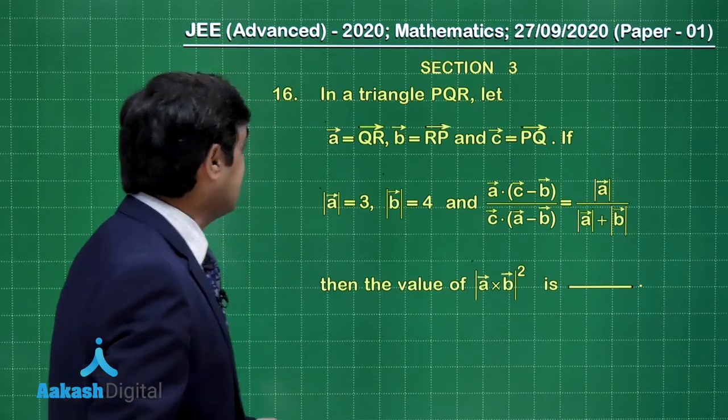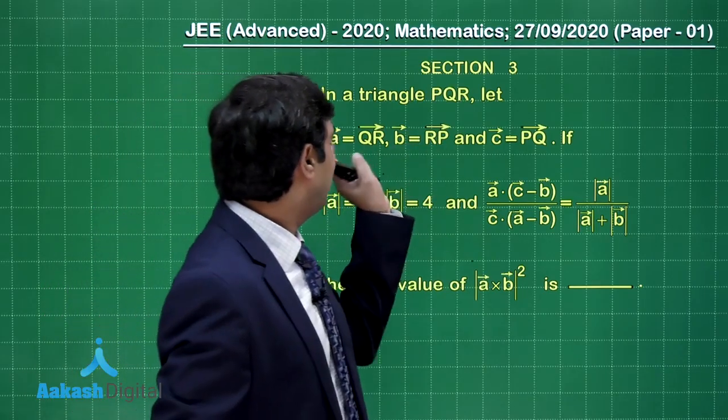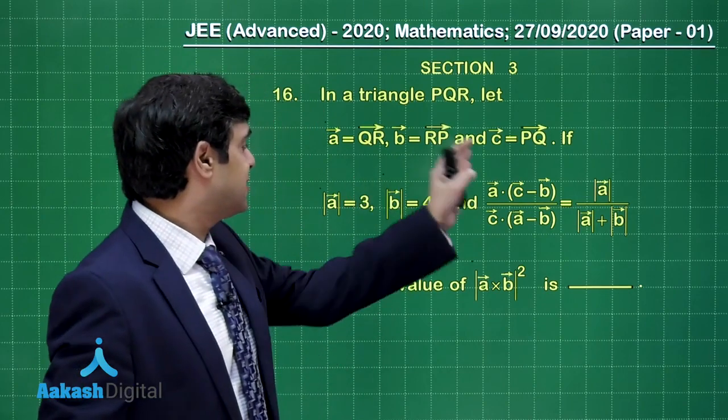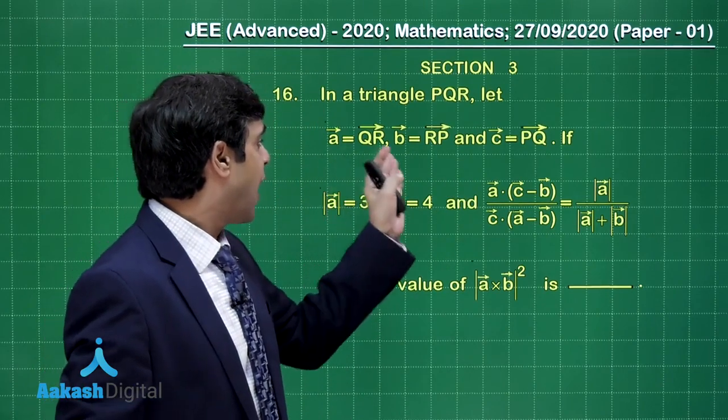Now let's take question number 16. In a triangle PQR, let vector A, vector B, vector C be given as QR, RP, PQ respectively.